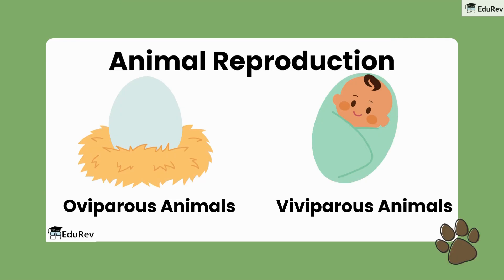Now, there are two main ways animals reproduce. Some animals lay eggs — we call these oviparous animals. Others give birth to live babies — these are called viviparous animals.